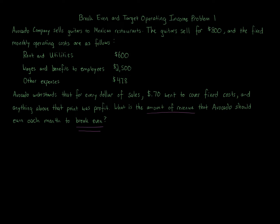Keep in mind that break even means you're desiring a zero profit — you just want to break even in terms of your costs. The formula for breaking even, depending on whether you're looking for revenue or units, is a function of the contribution margin or contribution margin ratio. You take fixed costs (FC) plus your desired profit — represented by the pi sign — and if you're breaking even, the desired profit will always equal zero.